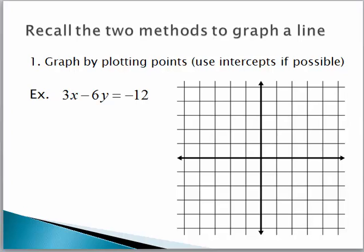You've learned two methods to graph. The first was by plotting points. So let's see if we remember how to do that. I'm going to graph this linear equation, 3x minus 6y equals negative 12, by finding points. We did that by organizing our work in a chart. The points I like to find are the intercepts. So this means plug in zero for x and solve for y.